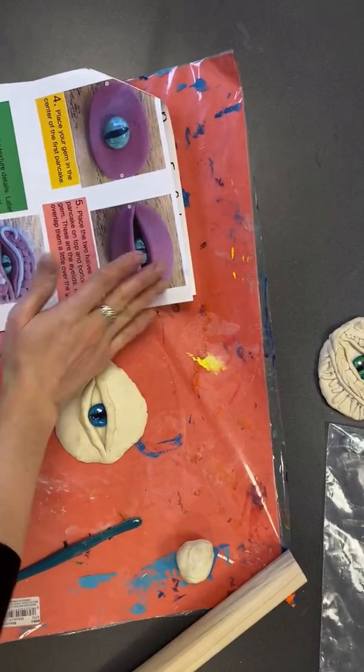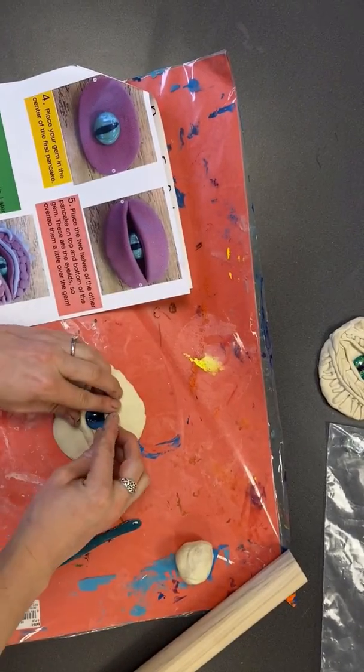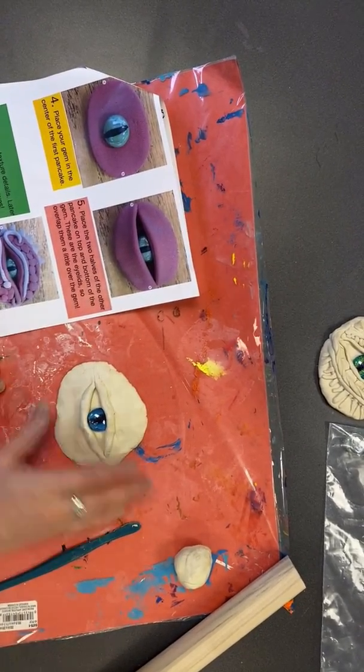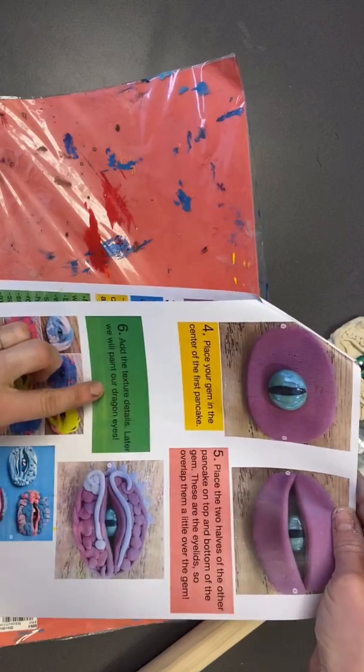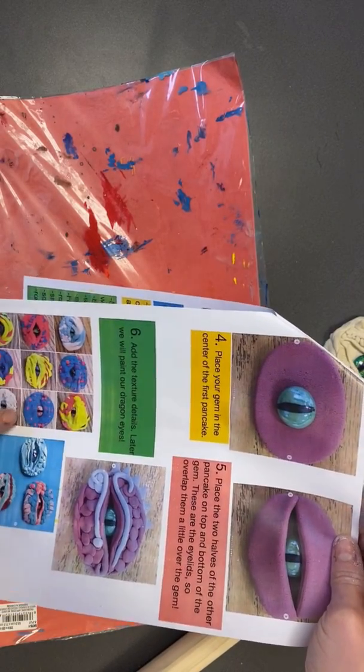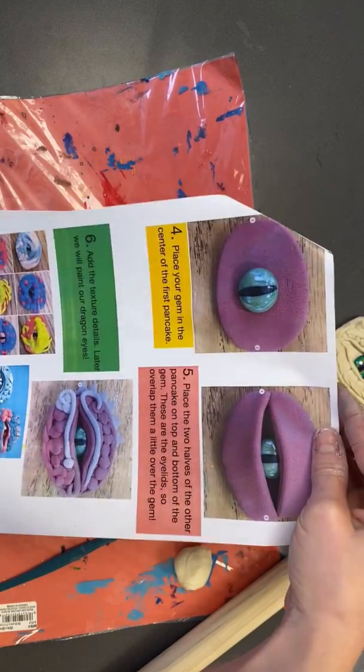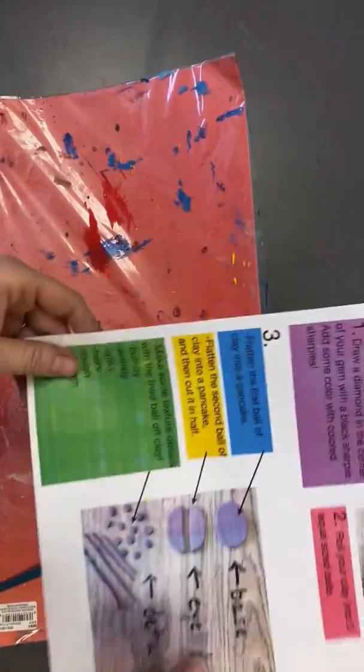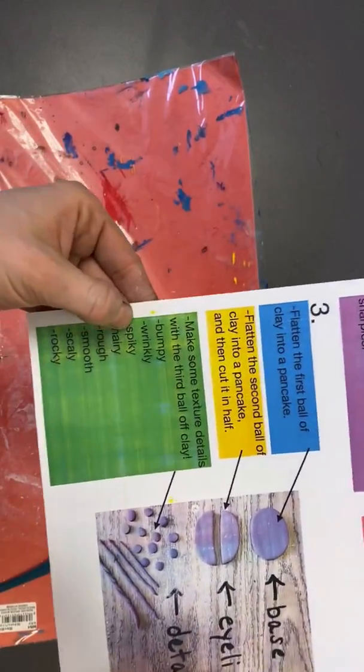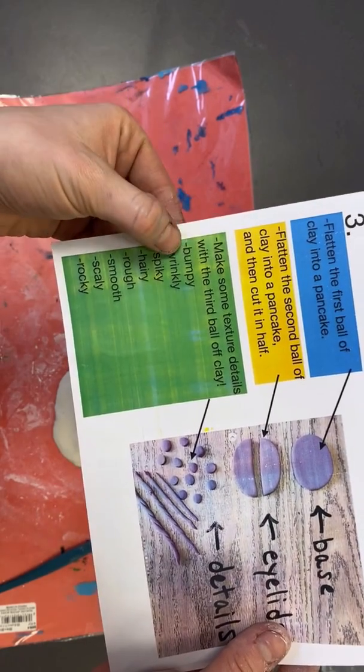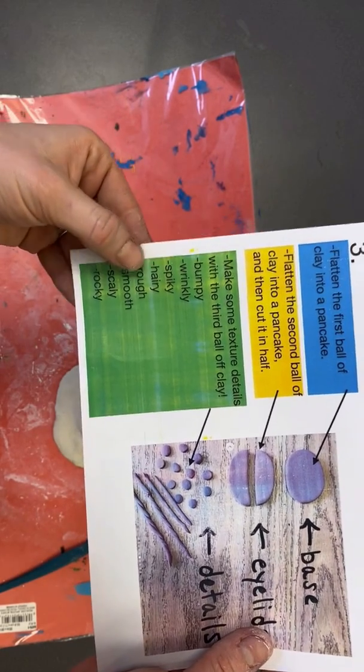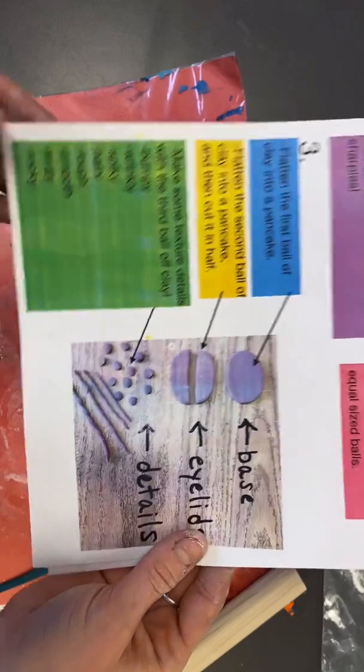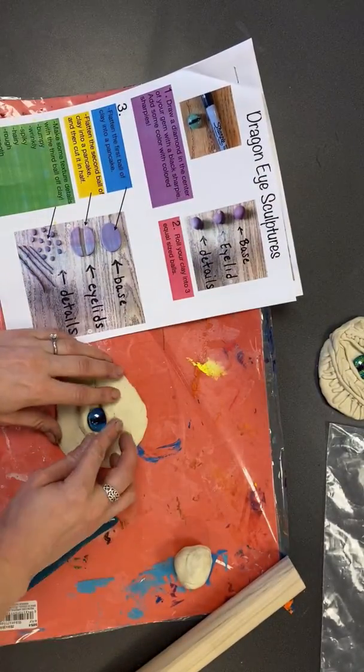Okay, I can flatten this out a little bit more if I want, but that is the first part of my eye. All right, now number six says add your texture details. Later we will paint the dragon eyes many colors. Texture details. Let's look at some ideas. Let's go back to number three. Some textures that I know that I can use: bumpy, wrinkly, spiky, hairy, rough, smooth, scaly, and rocky.